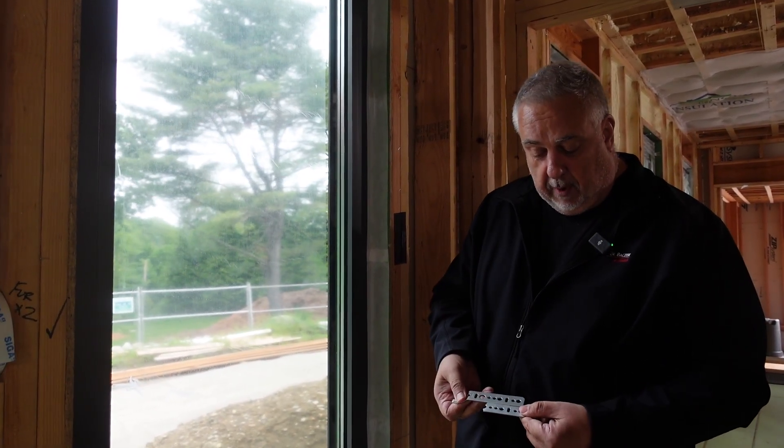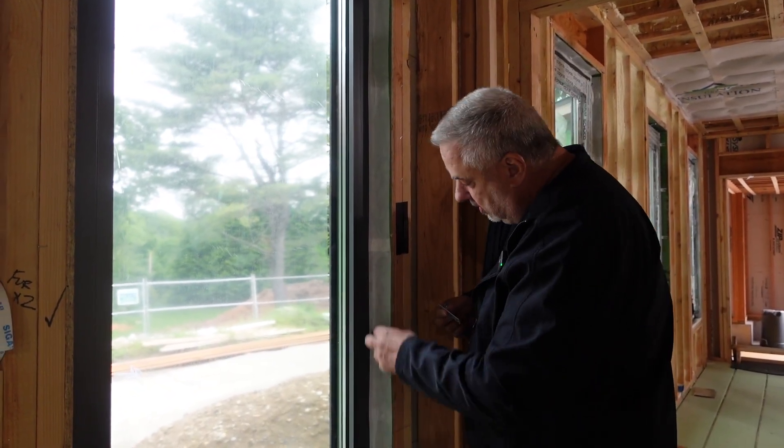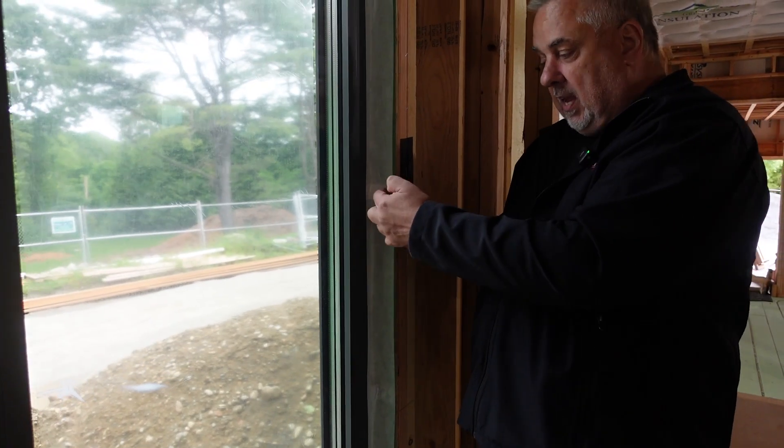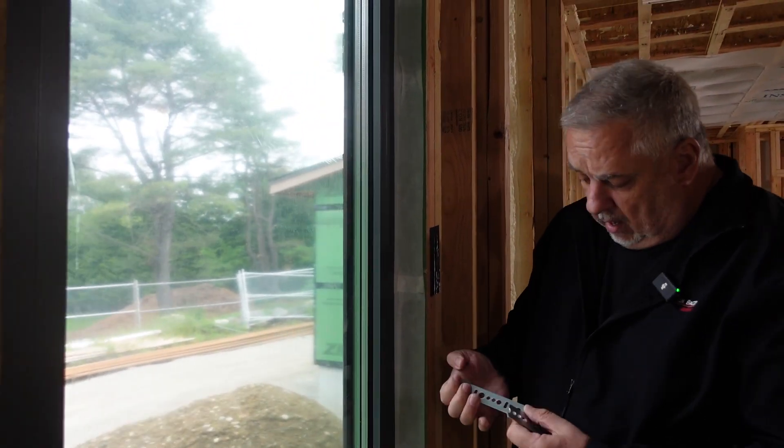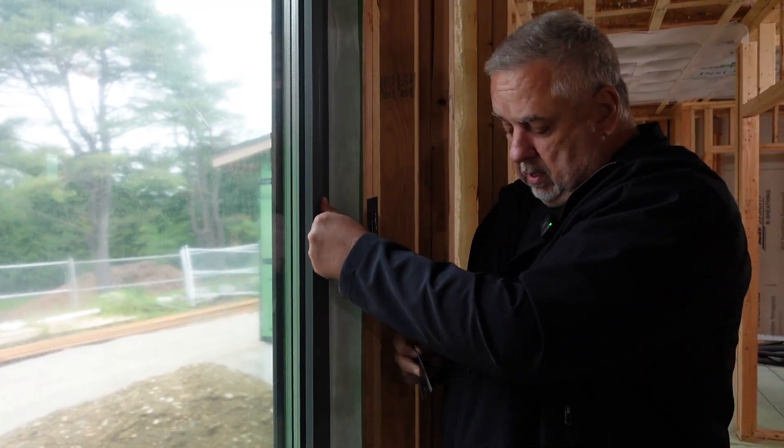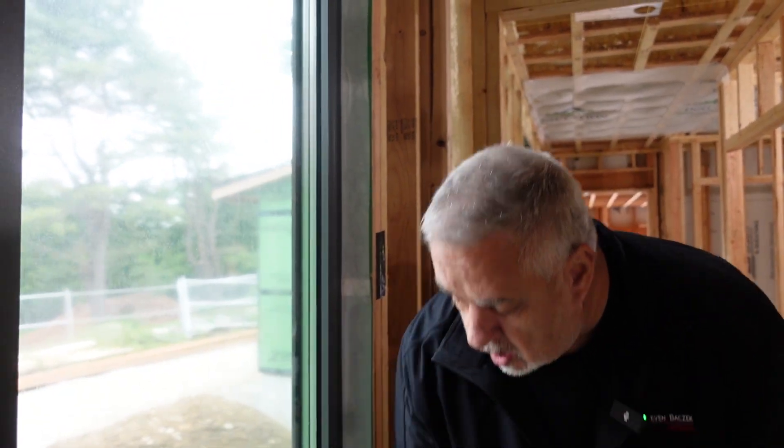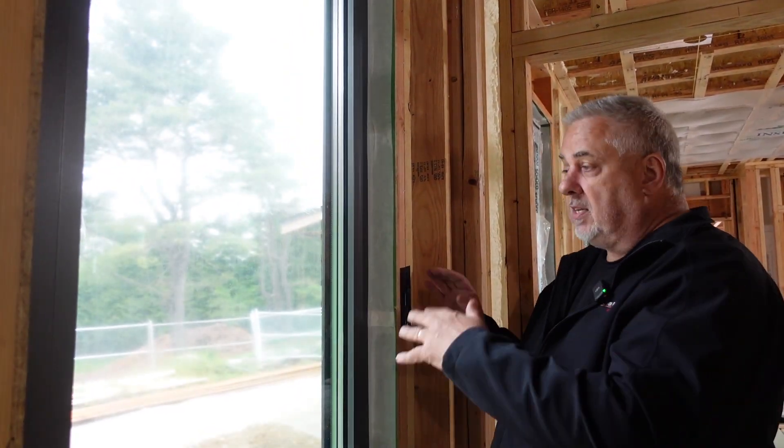So the first step you have to do is you basically have to trim off this outer edge. You can see there's a series of bumps here where that bracket is underneath. Basically they have just taken that and clipped that bracket off and they rely on the screw on the inside. The window certainly isn't going anywhere.